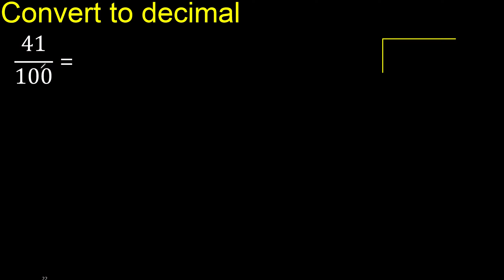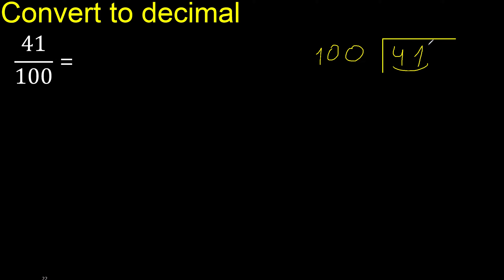41 divided by 100. 41 is less, therefore complete — always complete with 0. 0 point, write the decimal point only once.